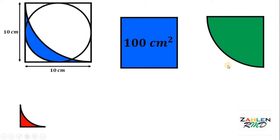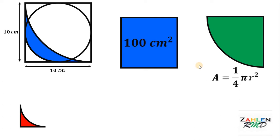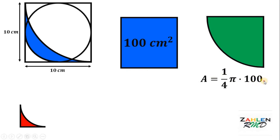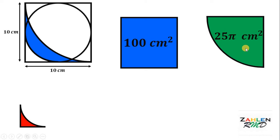Now let's find the area of this quarter circle. The formula is: Area = (1/4) × π × R². The question is: what is the value of R? Notice on this diagram, the length of the radius is the same as the side of the square. Therefore, R = 10. This gives us (1/4) × π × 10² = (1/4) × 100 = 25. Therefore, the area of this quarter circle is 25π square centimeters.